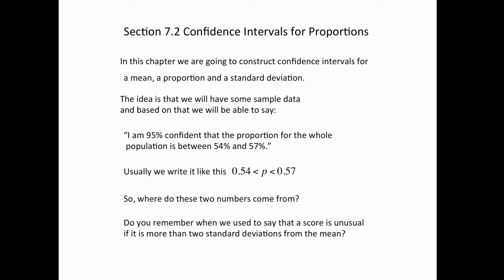Well, a while ago, we used to say that a score is unusual if it's more than two standard deviations from the mean. So basically, we would do something like this. The p hat is the sample percentage that came from our sample. And then you could say, add on two standard deviations, subtract two standard deviations.